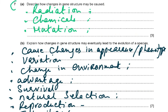Question 7A: describe how changes in gene structure may be caused. Changes in DNA can be caused by radiation — UV light, gamma rays, or X-rays — or by chemicals such as tar and cigarette smoke. These cause a mutation.